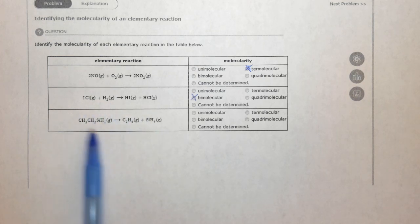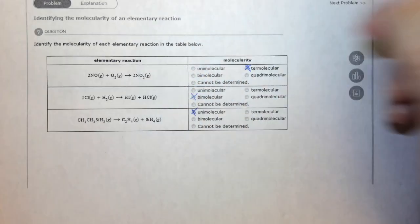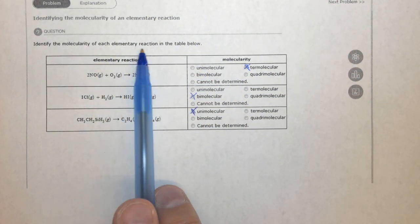And here, we just have one thing falling apart. This is also quite common. So this is called unimolecular, because we have one thing. So answering this question is very simple. You just count how many reactants there are.